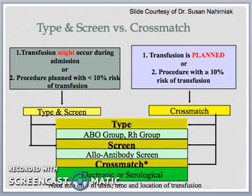This slide summarizes when a type and screen versus a cross-match should be requested. A type and screen is sufficient when there is a low probability of transfusion during the patient's stay in the hospital or if a planned procedure has a less than 10% risk of transfusion — examples include appendectomy, hernia repair, and cholecystectomy. A cross-match should be requested when the transfusion is planned or if the procedure has a greater than 10% risk of transfusion — good examples include elective hip replacements, coronary artery bypass graft surgeries, or solid organ transplants. For a cross-match request, please provide the number of red cell units required and the time and location of the transfusion to your transfusion medicine service.